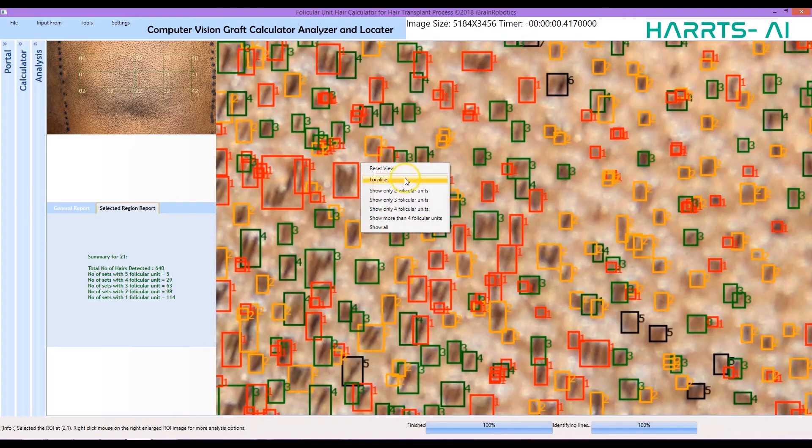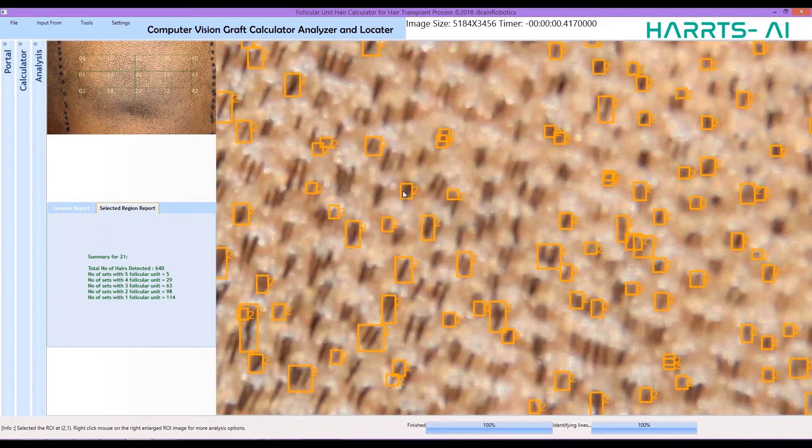You can also differentially locate 1, 2, 3, or 4 hair follicular units in the entire area of interest, or in each square unit area of the area of interest.